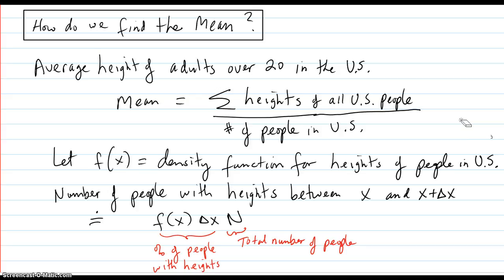So let's talk about the heights of adults that are over 20 years of age in the U.S. So the mean would just simply be summing up all the heights of all the people and dividing by the number of people.